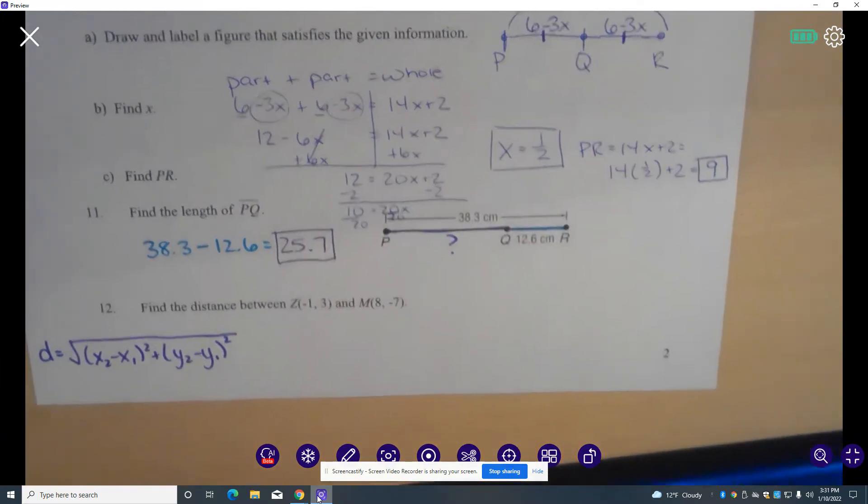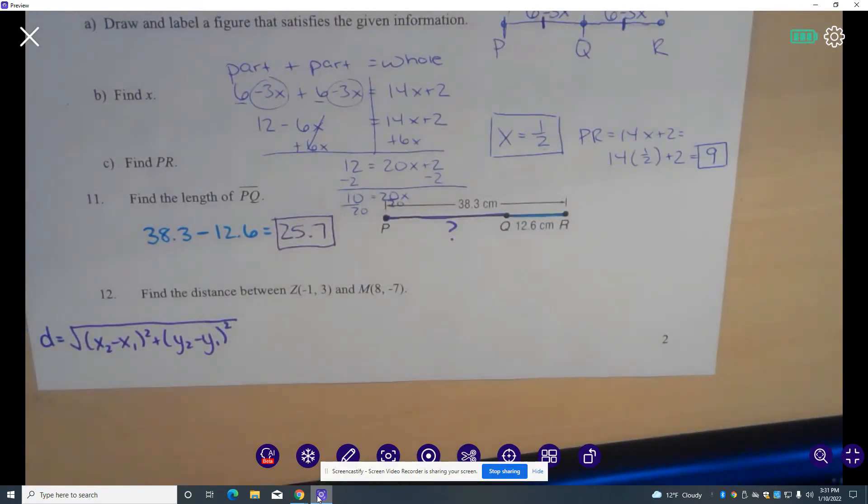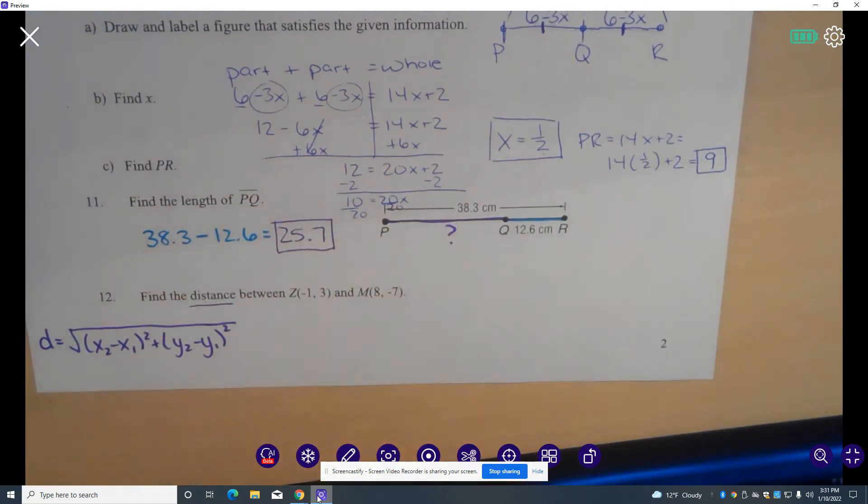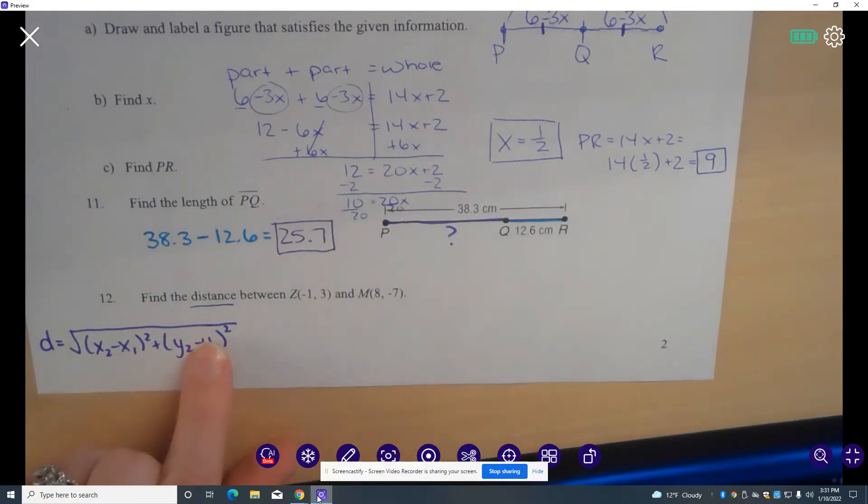In number 12, we need to find the distance between point Z, which is at negative 1, 3, and point M, which is at 8, negative 7. So with distance, we're finding the distance or length between two points. We're going to use the distance formula.